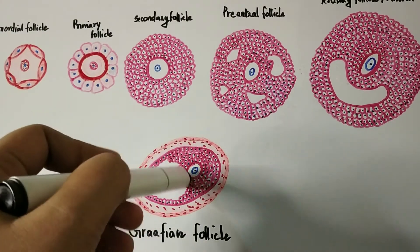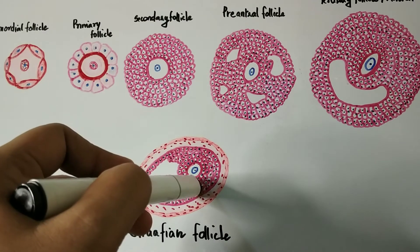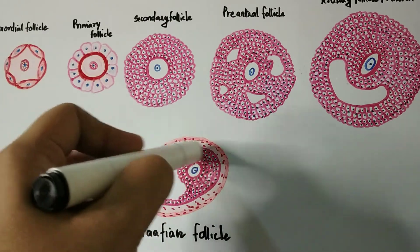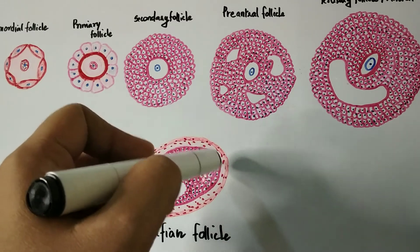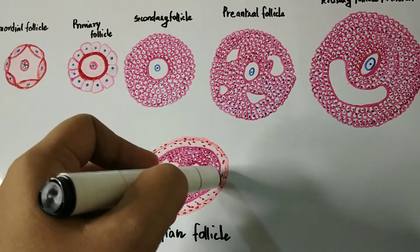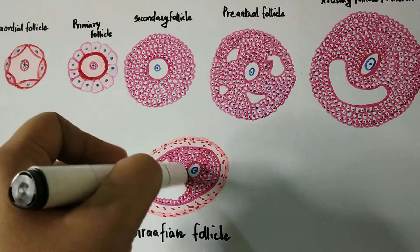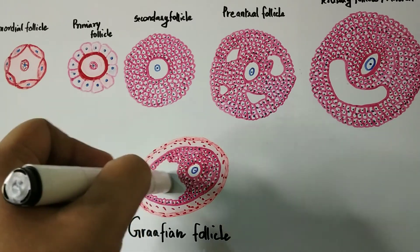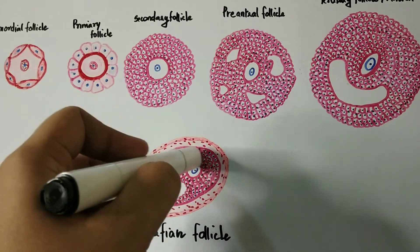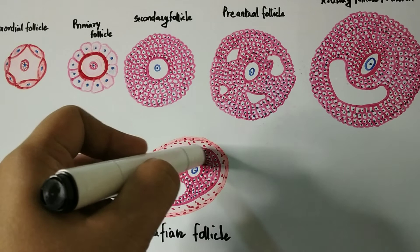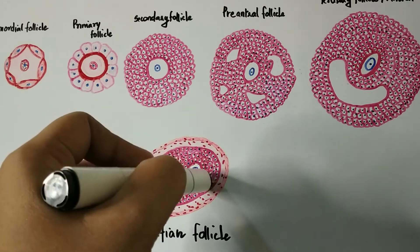The projection of granulosa cells which projects the primary oocyte toward the follicular antrum is called the cumulus oophorus. The primary oocyte along with the corona radiata is attached to the wall of the follicle, and that part is called the discus proligerus.